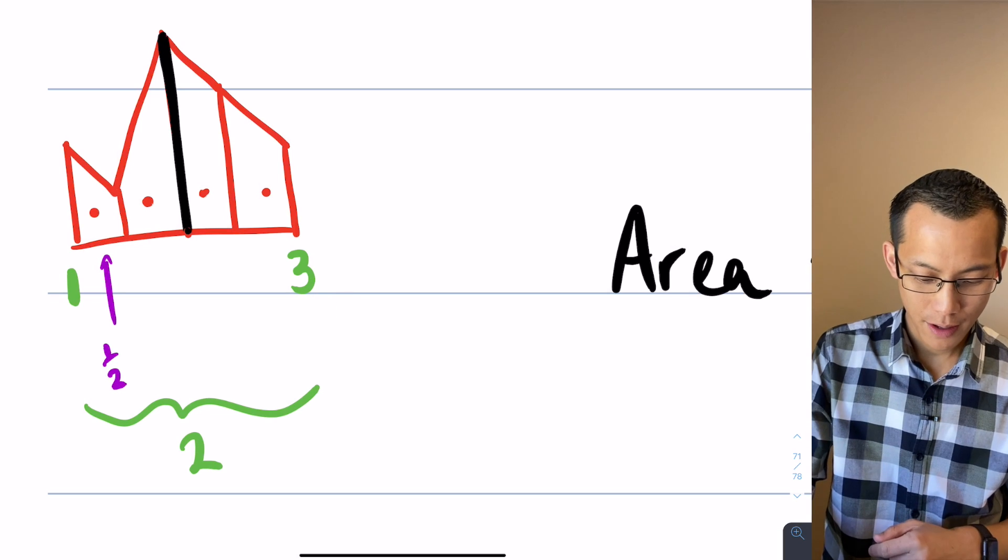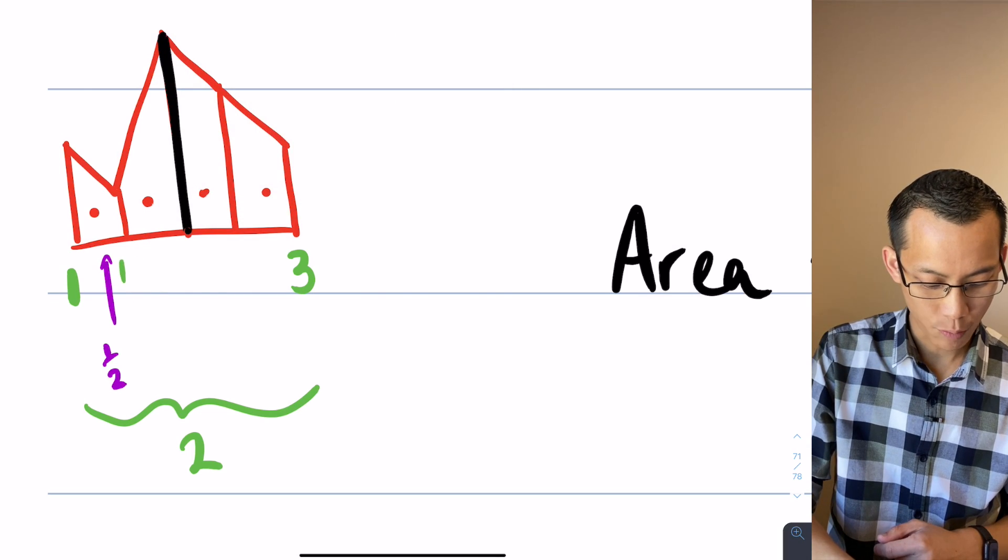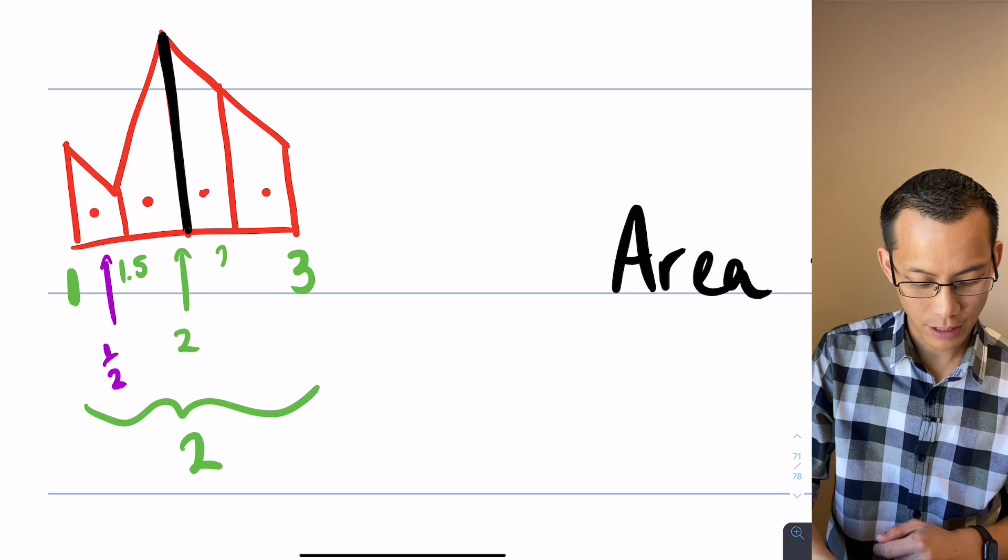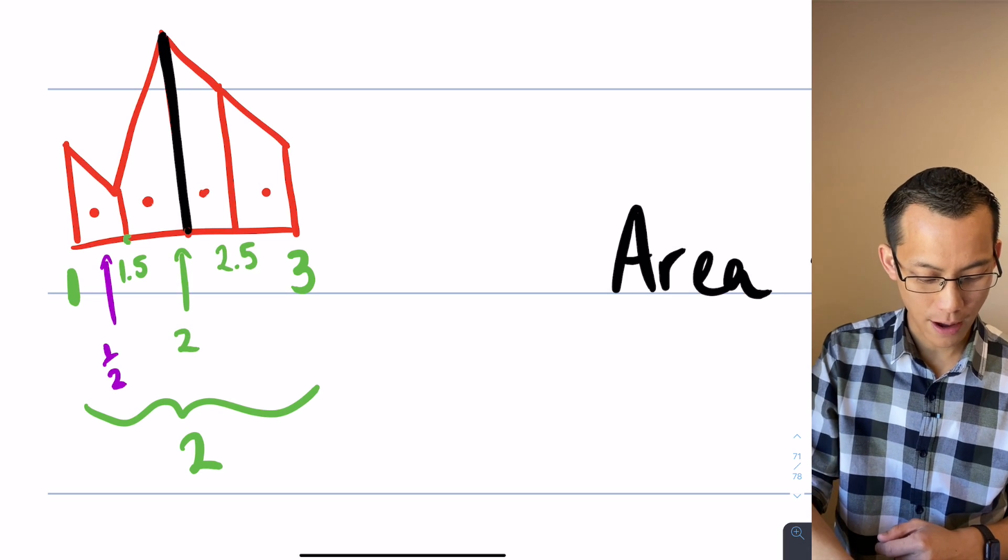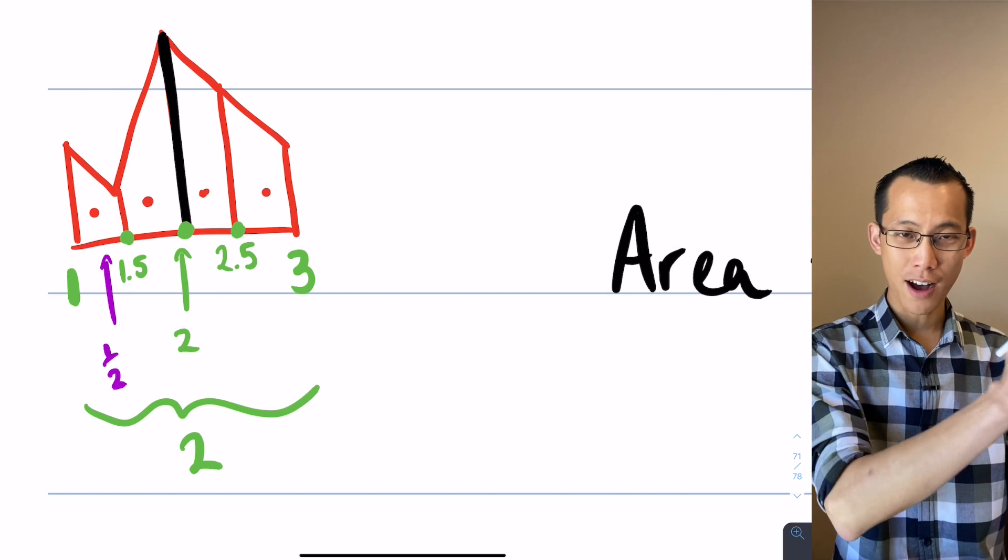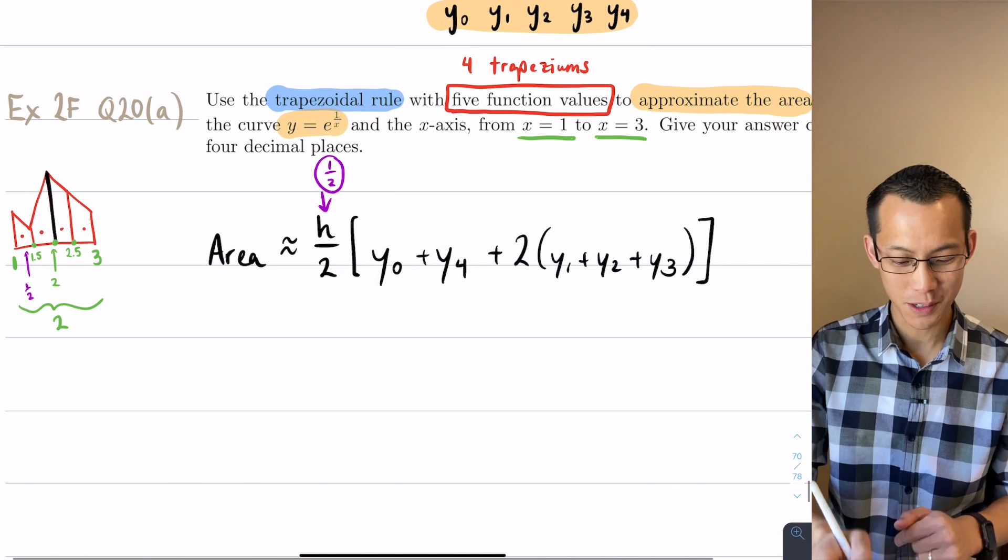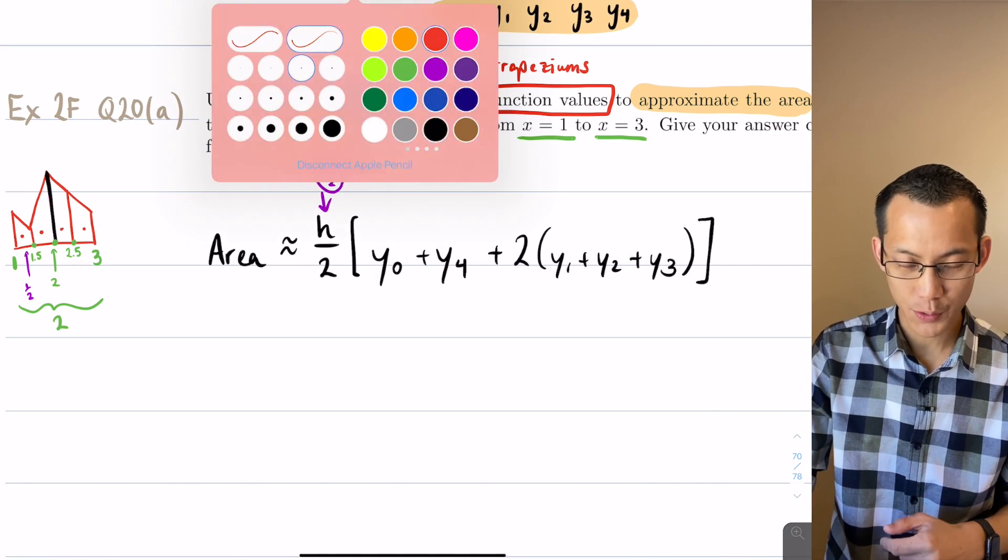And then secondly it also tells me where the function values are. I've already said 1 and 3, they're my y naught and my y4. And then all I need to do is progress half a unit every time. This one will be 1.5, this one will be 2, and then this one will be 2.5. You can see those values, each time I'm progressing half, half, half, half.